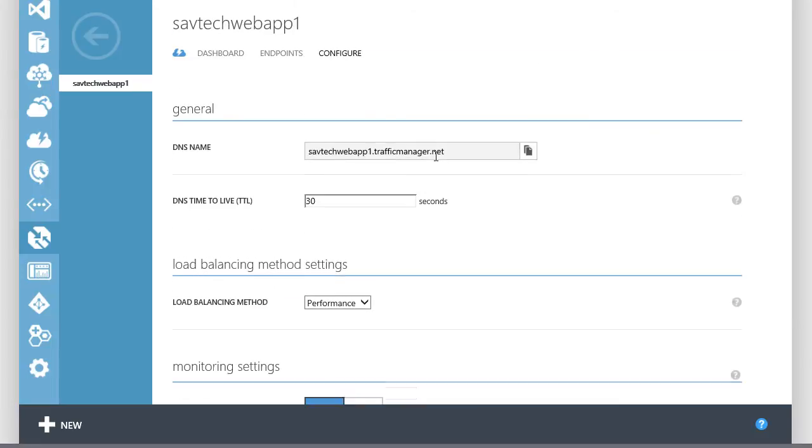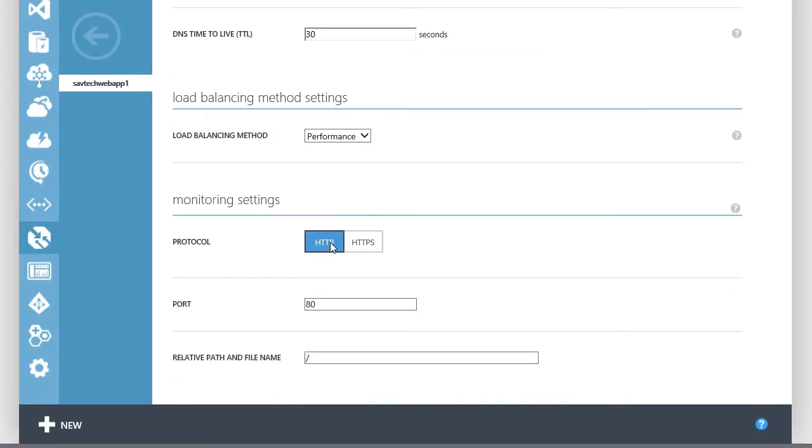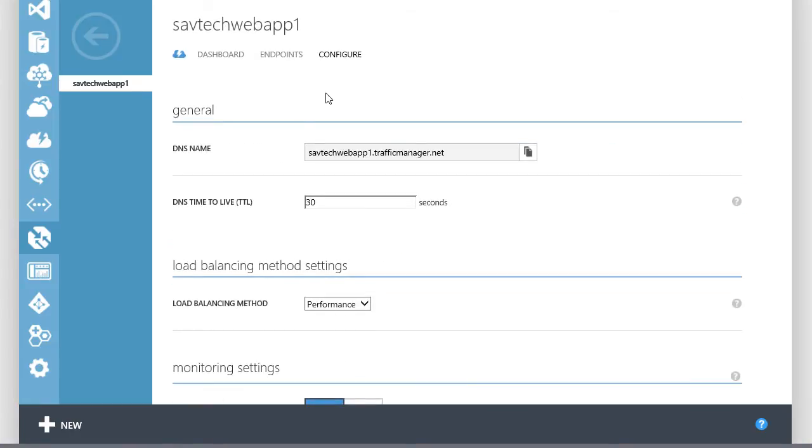And then to check if those endpoints were available, I'm using basic HTTP on port 80 and just the base URL. Now, if this was a production application and the application had a certain URL or a certain app, I would actually type in the path and file name of the application. Because it's not just checking is the website available, it's more useful if I'm actually checking the specific application that's running. So that's the profile configured.